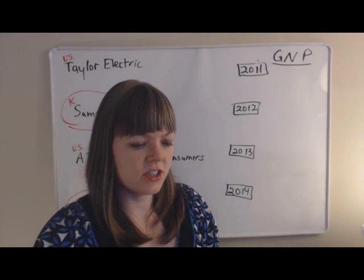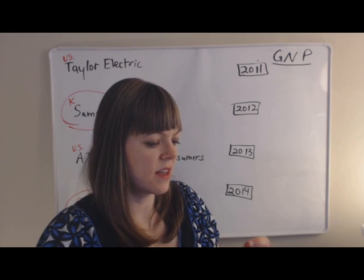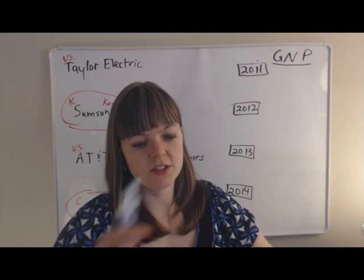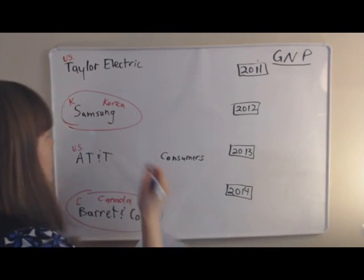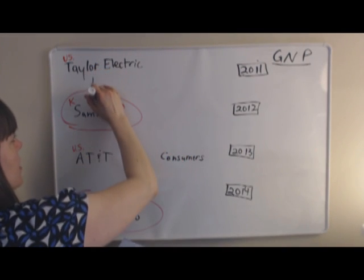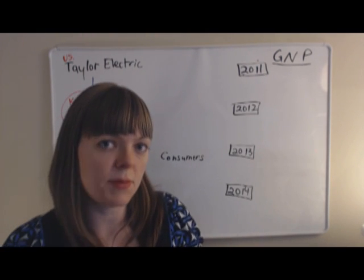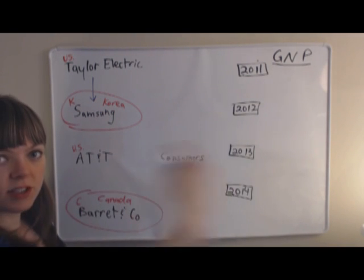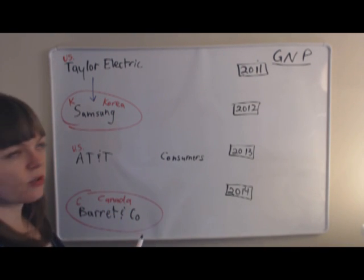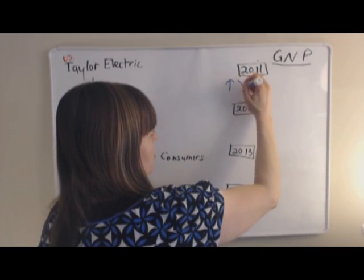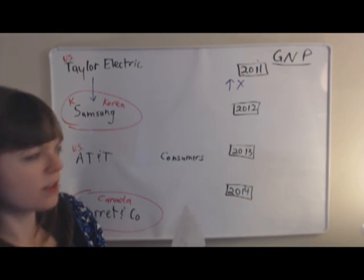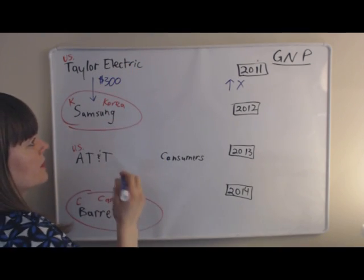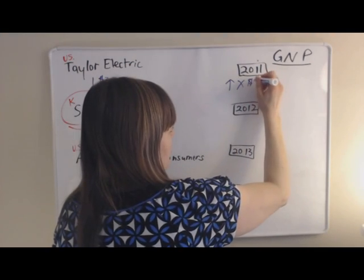Now we can trace what happens as stuff is being produced by these different firms. We have Taylor Electric selling to Samsung. We're crossing a border, so this is either imports or exports. Since it's going away from the U.S. to Korea, it's going to be exports. So we have an increase in exports of $300 that Taylor Electric sells to Samsung.